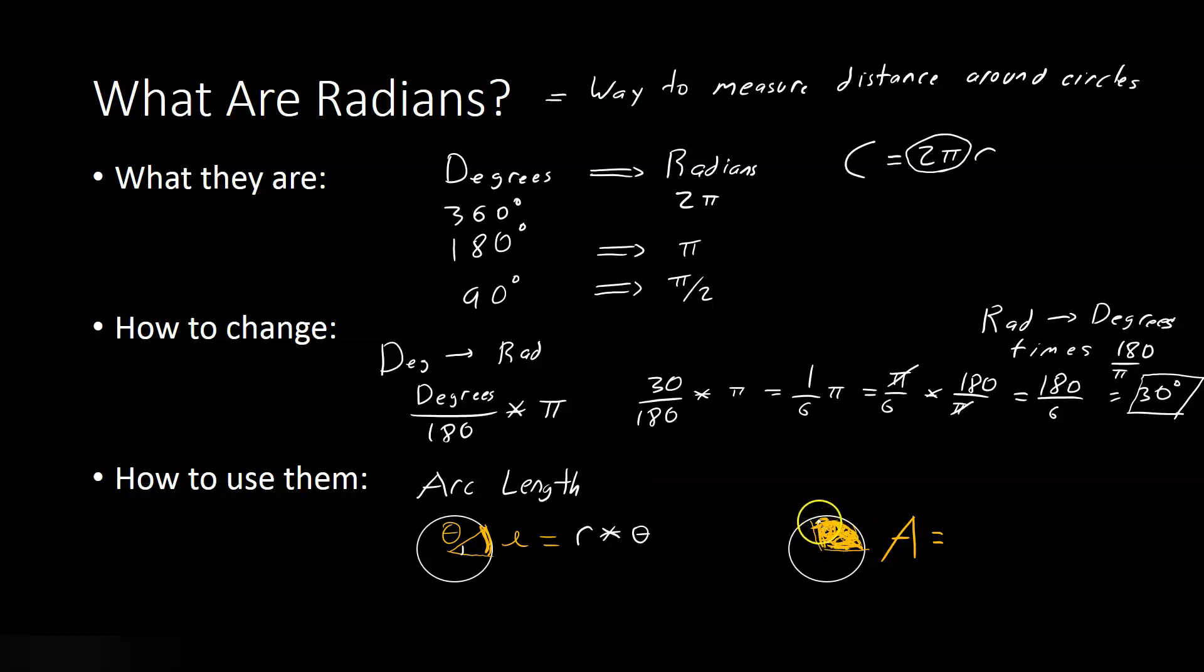You can also find the area of a piece of a circle if you know the angle theta. It turns out the area of a section of a circle is 1 half times theta times r squared, where, once again, theta is the angle, and r squared is the radius, the distance from the center to the outside.